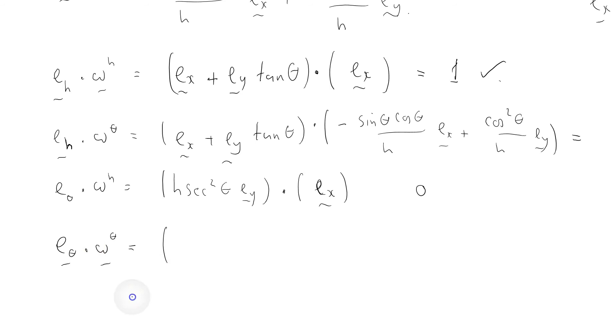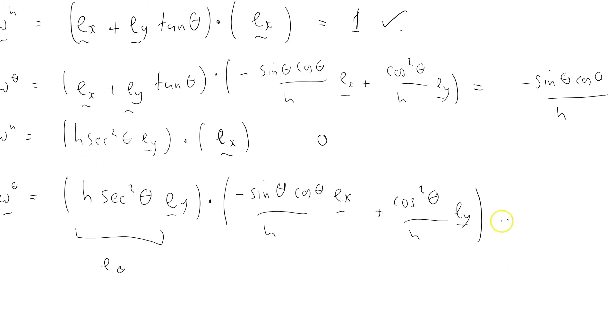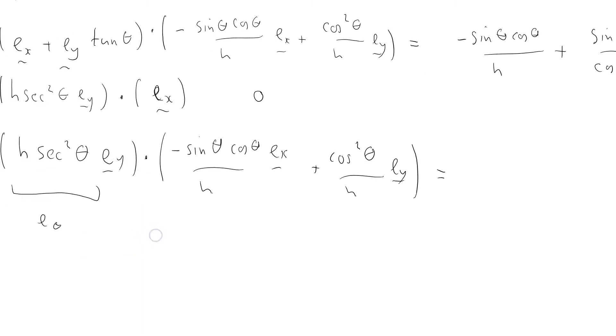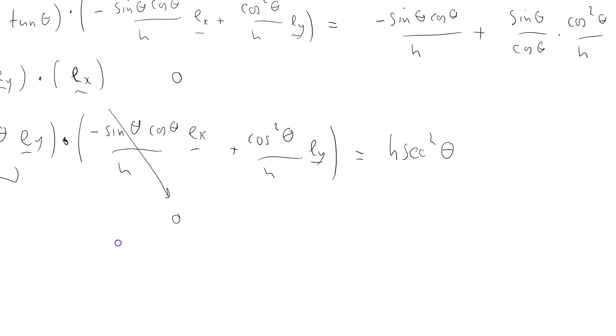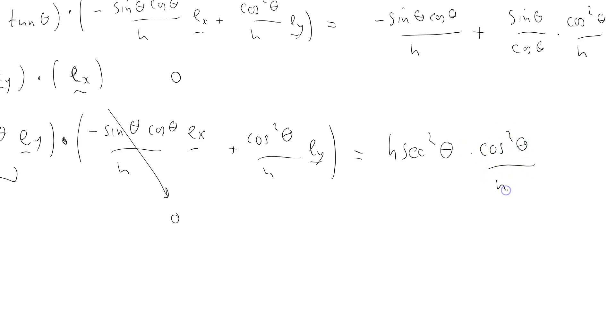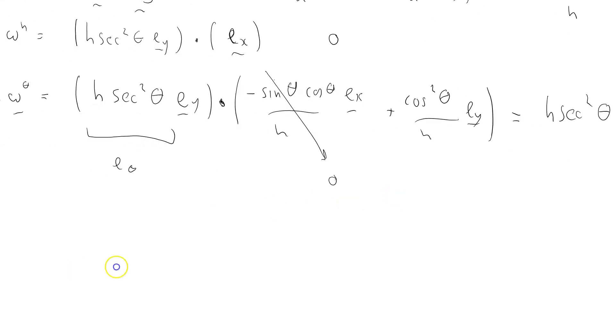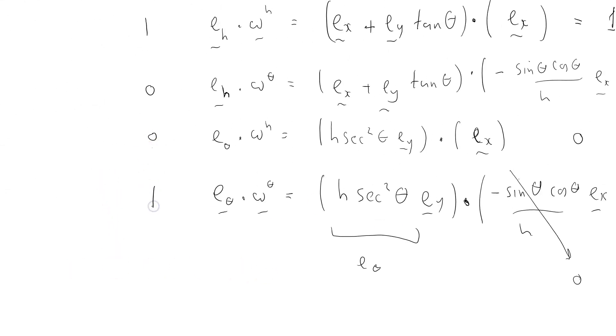We've got h sec²θ e_y dot—yes, that's e_theta, isn't it? Omega theta is this guy here: -sin θ cos θ/h e_x + cos²θ/h e_y equals—well, that term drops out because there's nothing to dot it with in the other term. And we've got h sec²θ times cos²θ/h e_y · e_y equals 1. Check. So that was equal to 0 and that's equal to 1. So everything works.